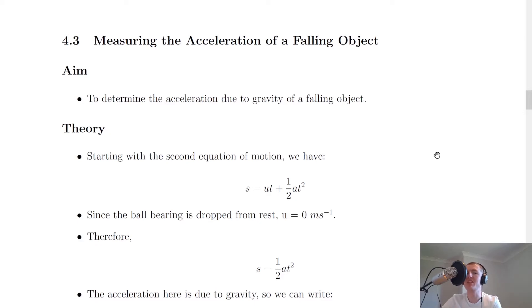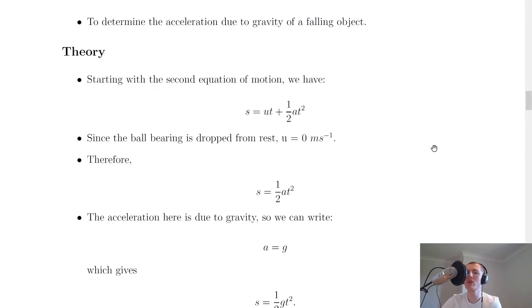The aim of this experiment is to determine the acceleration due to gravity of a falling object. And before we look at the method, we need to look at a bit of theory to try and come up with an equation for this acceleration due to gravity, G. And the way we can do this is using equations of motion.